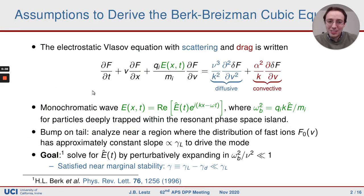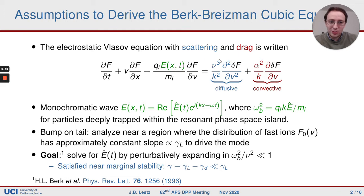We're going to study the 1D bump on tail problem by starting with the Vlasov equation for the mode amplitude and particle distribution f. Our collision operator has both diffusive collisions scattering, characterized by nu, and also convective drag characterized by alpha.